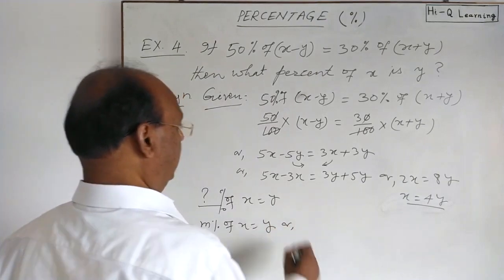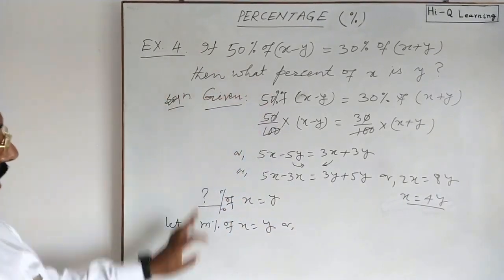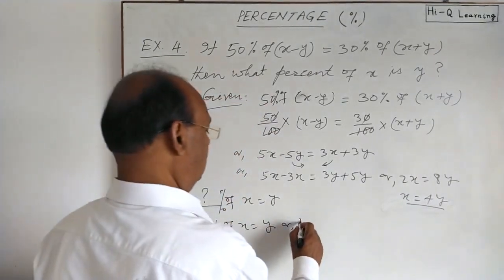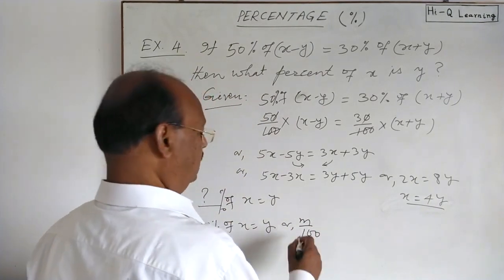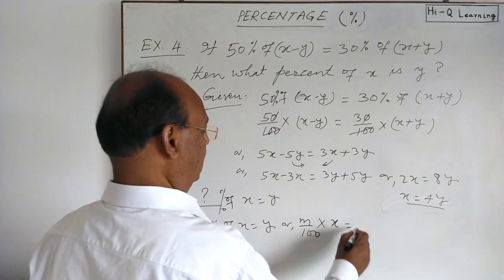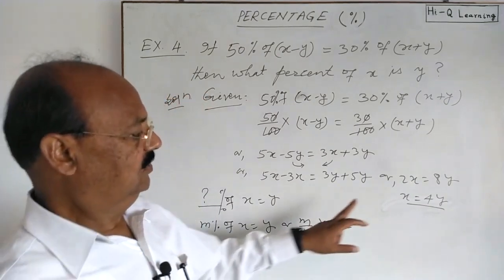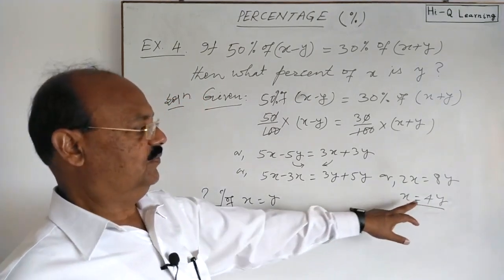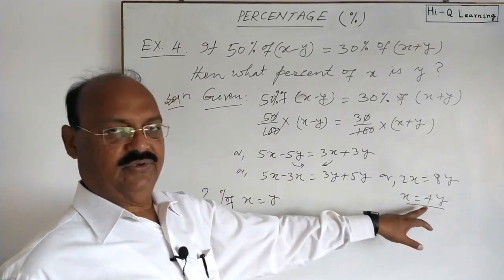Or, as we have written previously also, m percent means m by 100, of means multiplication of x, and in place of y we can write how much? y is equal to x by 4.